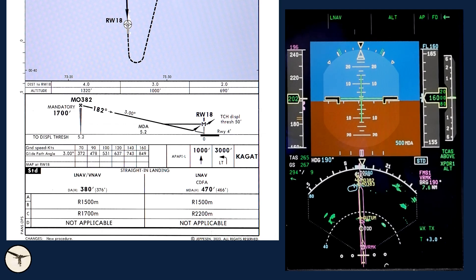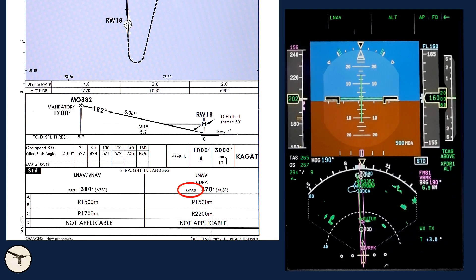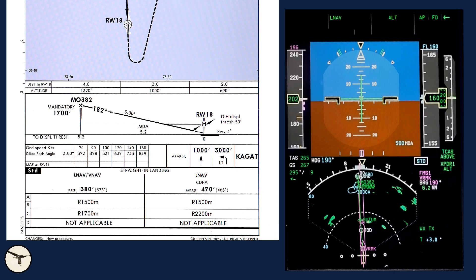When flying an LNAV approach, we must use vertical speed mode for descent. This is less accurate, and therefore the minima is higher. Also, minima is defined with minimum descent altitude, MDA. We are not allowed to descend below MDA unless we are visual and can land. To cater for altitude loss during go-around, we must add an extra altitude. ATR is in aircraft category B, and at least 30 feet must be added.